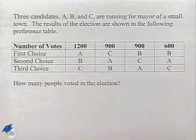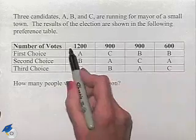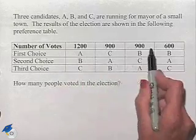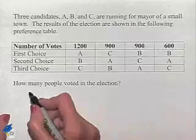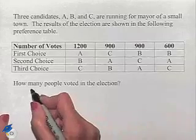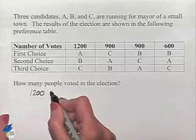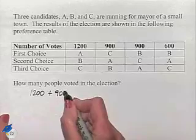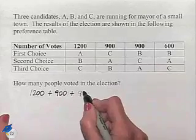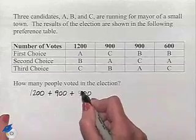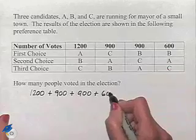The question is, how many people voted in the election? The number of votes running across the top row is what we're interested in. We're going to take the sum of those: 1,200, plus 900, plus another 900 from the next column, plus 600 from our last column.